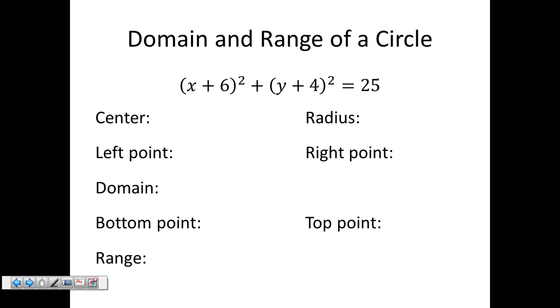Now let's talk about the domain and range of a circle. I have my center at negative six comma negative four. When we see x plus, that means our h value is negative. When I see y plus, my k value is negative. My radius is five. From my center, my leftmost point is five units to the left at negative eleven comma negative four. My rightmost point is five units to the right at negative one comma negative four.